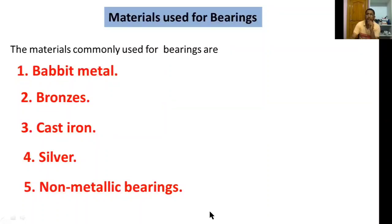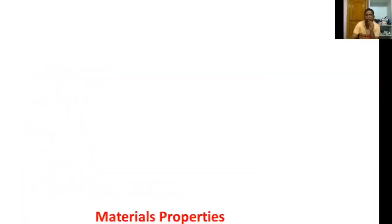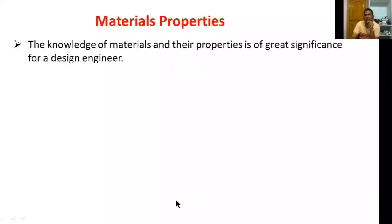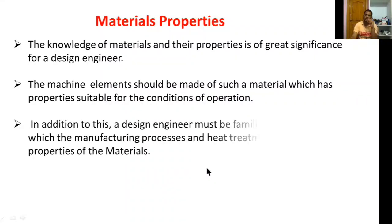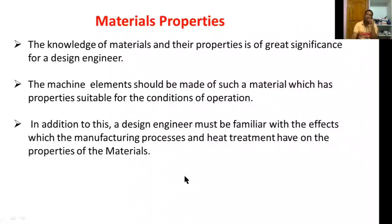In this session, I will explain the important material properties. The knowledge of materials and their properties is of great significance for a design engineer. The machine elements should be made of such a material which has the properties suitable for the conditions of operation. The design engineer must also be familiar with the effects which manufacturing processes and heat treatment have on the properties of the material.